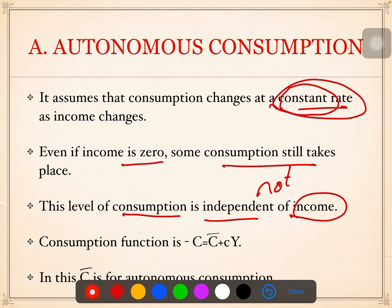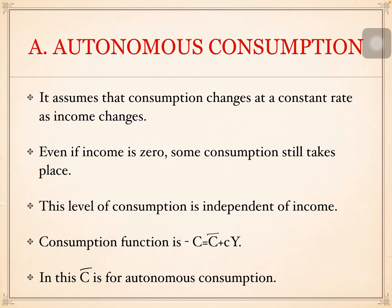Combining both types, the consumption function can be expressed as: C = C̄ + cY. Here C is the consumption function, C̄ (C-bar) is autonomous consumption, and cY — small c multiplied by Y — is induced consumption, which is the second kind of consumption.